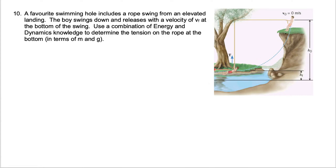We've got a guy on a Tarzan rope swinging down to the bottom of this loop, and we want to use a combination of conservation of energy and what we know about circular motion dynamics to figure out at least an equation for the tension of the rope in terms of his mass and gravity. So it's just going to be algebraic.